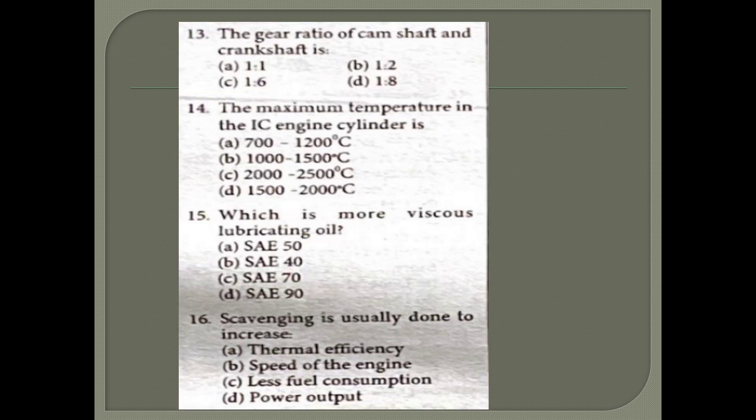13th question: The gear ratio of camshaft and crankshaft is 1 is to 2. 14th question: The maximum temperature in the IC engine cylinder is 2000 to 2500 degree Celsius.